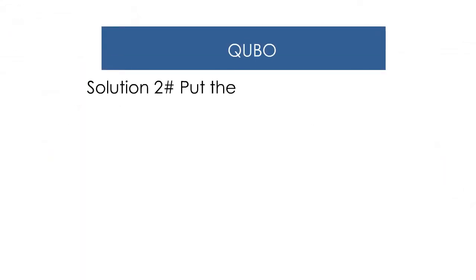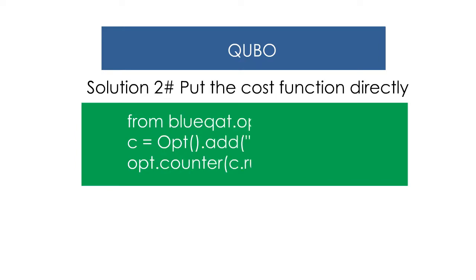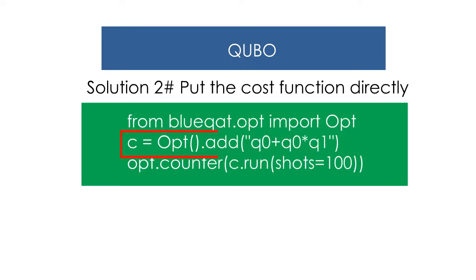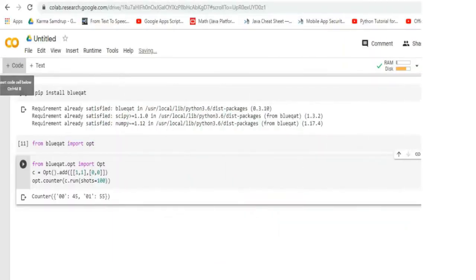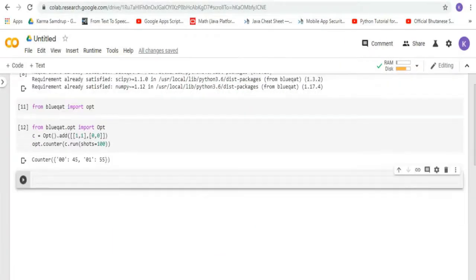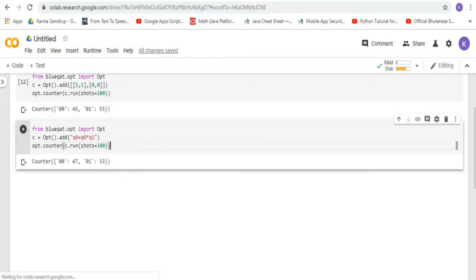Solution 2 is much easier — just put the cost function directly. This is the cost function. When we run this in Google Colab, we'll get the same output. Let's try it out — run this. We can see that we have the same output.